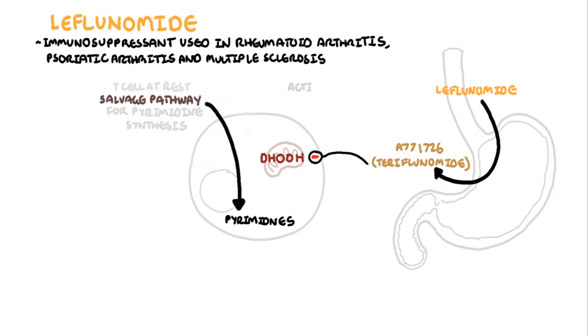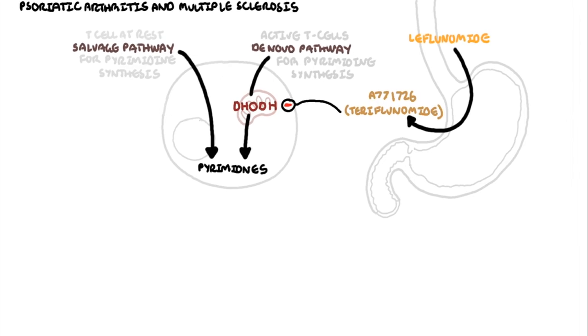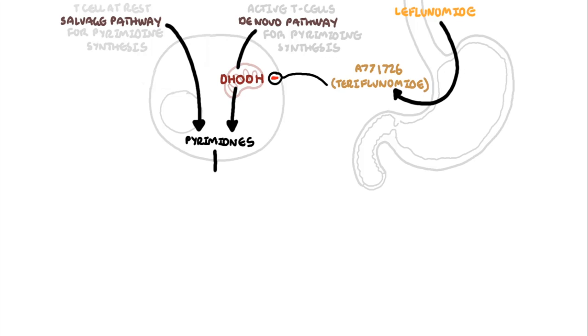However, activated T-cells use the de novo pathway of pyrimidine synthesis. The de novo pathway of pyrimidine synthesis allows for DNA and RNA synthesis, which is important for activated T-cells to proliferate.